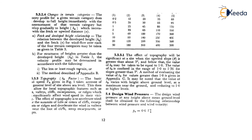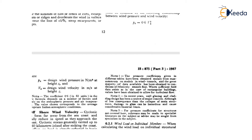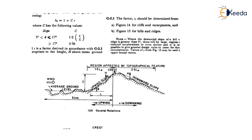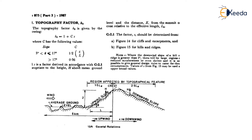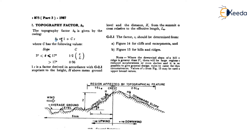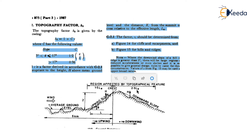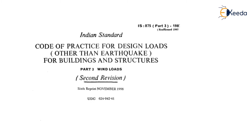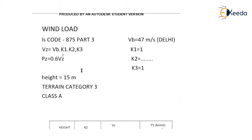For the K3 topography factor: if your building is constructed in hilly areas, you have to calculate K3 from the code. For plain terrain topography, K3 equals 1.